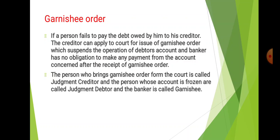If a person fails to pay the debt owed by him to his creditor, the creditor can apply to court for issue of a garnish order, which suspends the operation of the debtor's account. The banker has no obligation to make any payment from the account concerned after receipt of the garnish order. The person who brings the garnish order from the court is called the judgment creditor, the person whose account is frozen is called the judgment debtor, and the banker is called the garnishee.